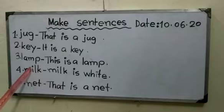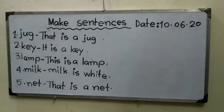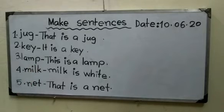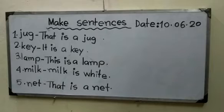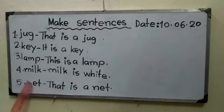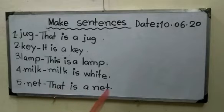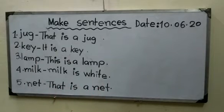Number 4 - Milk. Milk mani ki? Milk means what? Dud. Milk is white. Milk is white - Dud hai Shada. Okay. Number 5 - Net. Net. Jal. That is a net. Eta hai ekti jal. Okay.